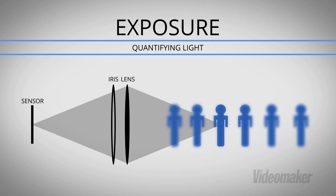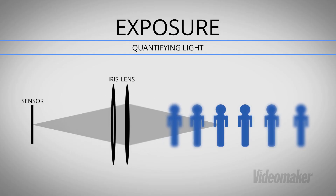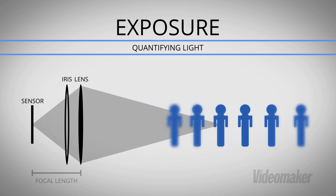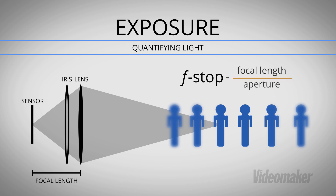In video production, we want to quantify everything we can, and the amount of light hitting your sensor is no exception. The amount of light that hits your sensor is affected by both the size of your aperture and the focal length of your lens. The focal length of your lens is a measurement from the optical center of your lens to your sensor. The f-stop, or f-number, takes both of these factors into account to arrive at a standard reference.